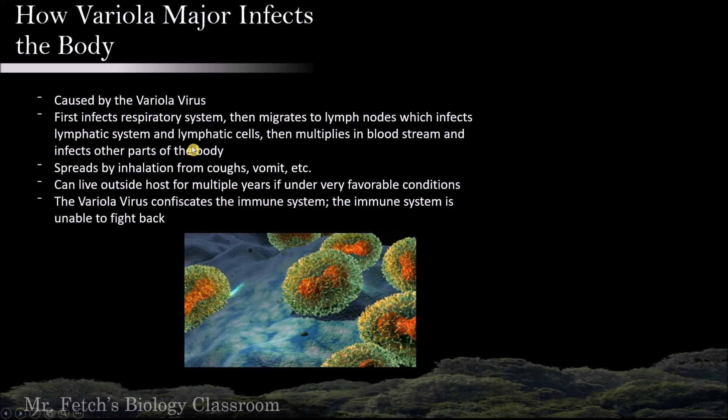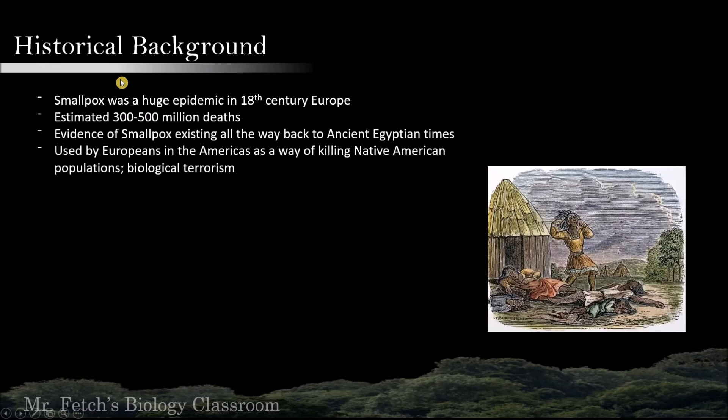Smallpox was a huge epidemic in the 18th century in Europe, with an estimated 300 to 500 million deaths occurring because of this disease. Evidence of smallpox exists all the way back to ancient Egyptian times. It was also used by Europeans in the Americas as a way of killing Native American populations during colonization — considered the first instance of biological terrorism.